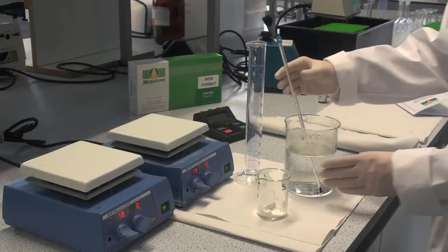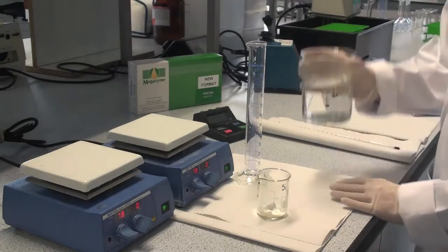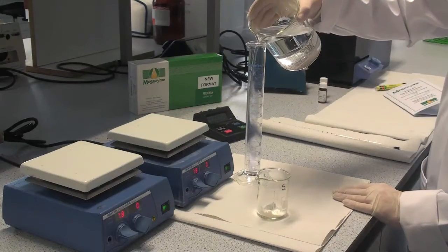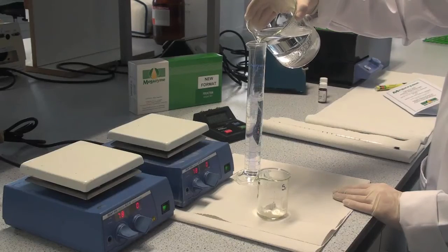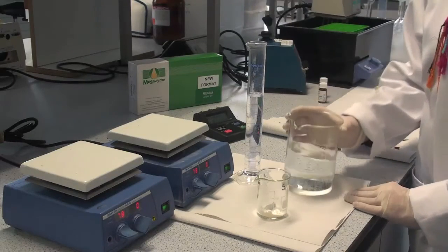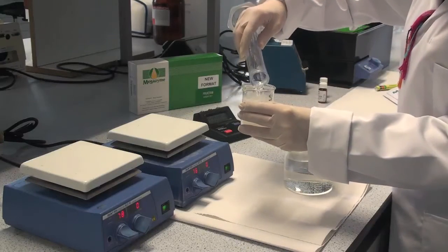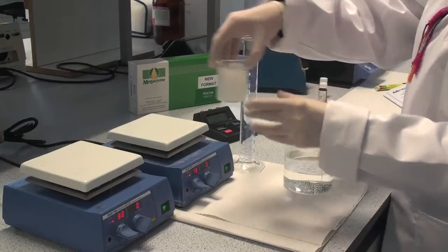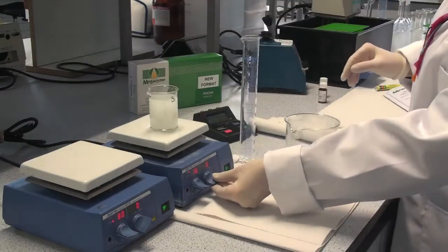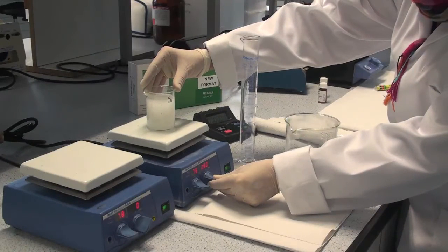To samples of 1 gram, add 80 ml of hot distilled water at approximately 80 degrees centigrade. Place the beaker on a hot plate magnetic stirrer and stir with heating at approximately 80 degrees centigrade for 15 minutes or until the sample is completely dispersed.